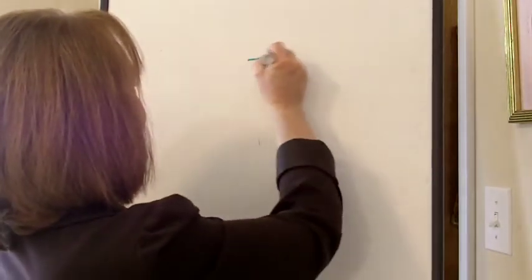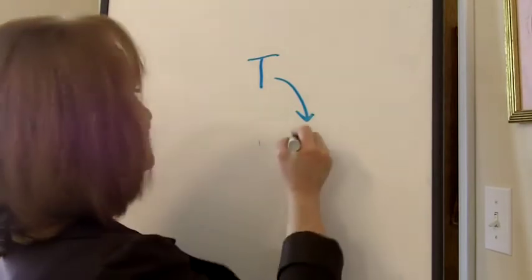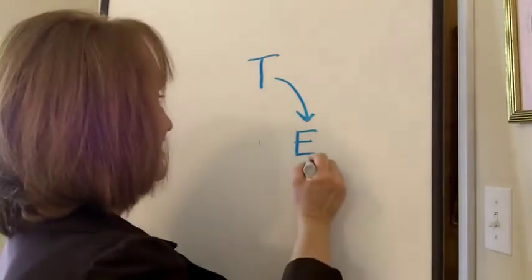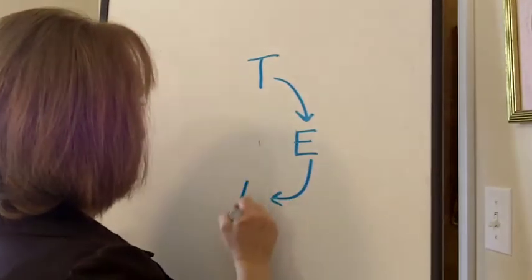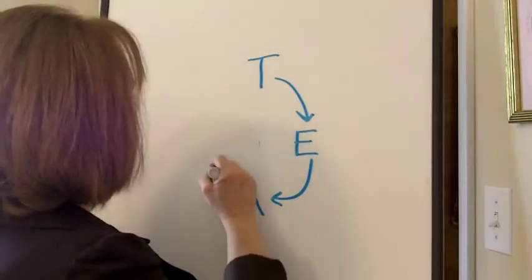But I want to share with you a principle that I've learned recently that has been so helpful for me, and it has to do with the cycle that our thoughts create. First, we have a thought, and that thought creates an emotion. That emotion will affect our actions, and those actions will produce a result.